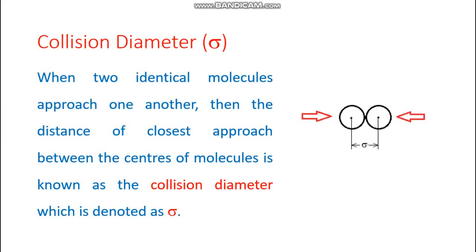Here is a picture where two identical, spherical molecules are approaching each other — one moving from left to right and the other from right to left. The point of contact is the closest approach, and the minimum distance between the two centers at that point is known as the collision diameter.